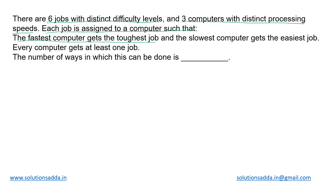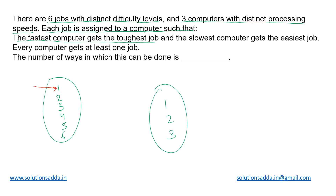The six jobs are distinct and the three computers are also distinct. Out of these six jobs — one, two, three, four, five, and six — the most difficult job is the first one. There are just three computers: one, two, and three. The fastest computer gets the toughest job. Since they are all distinct, there is only one fastest computer, and the slowest computer gets the easiest job — job six.